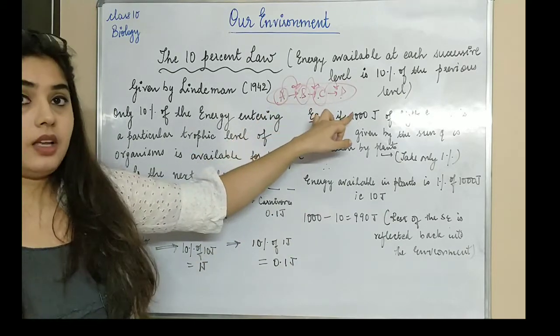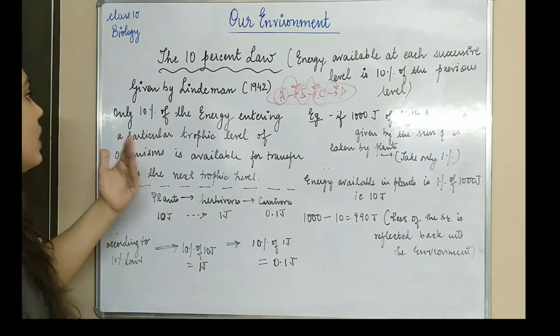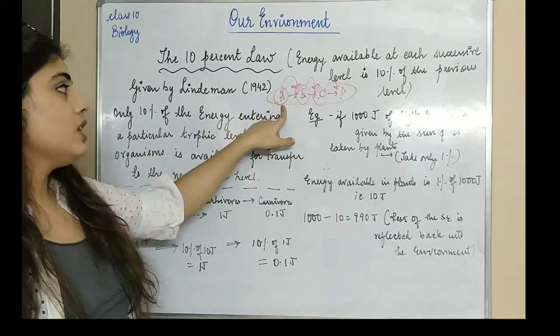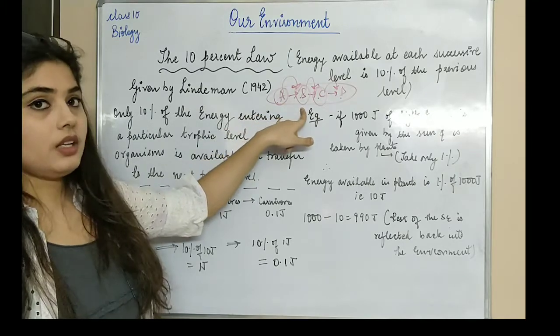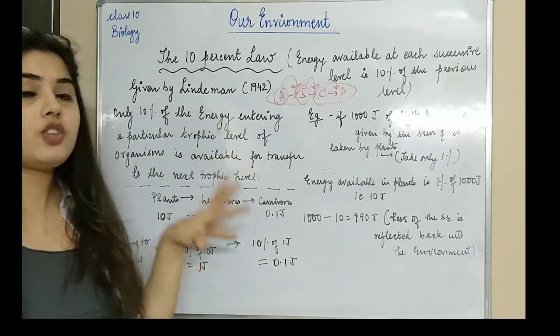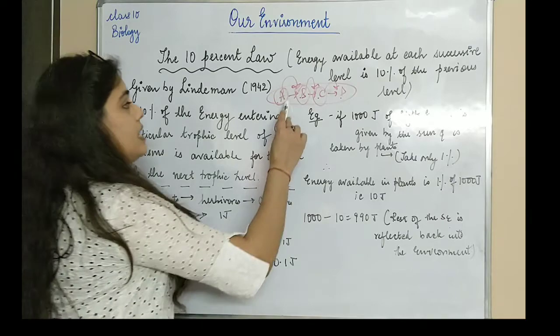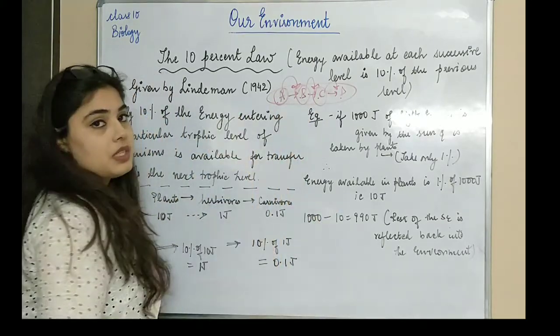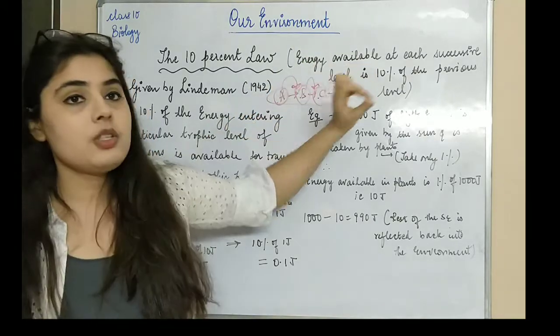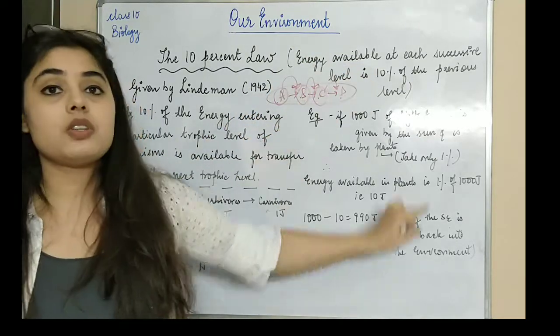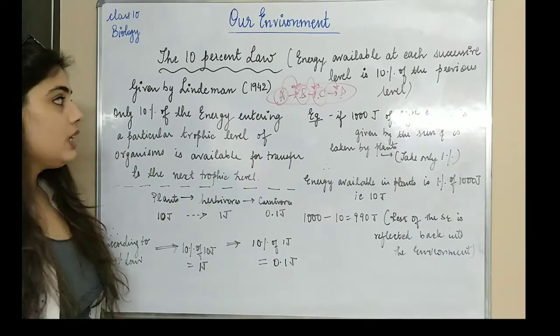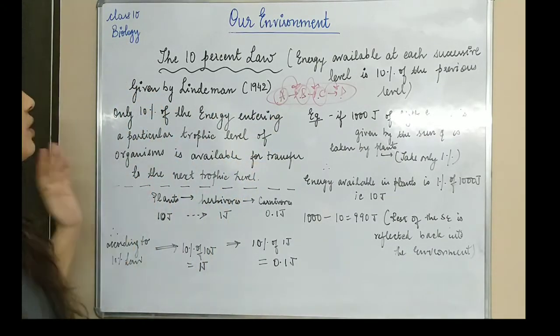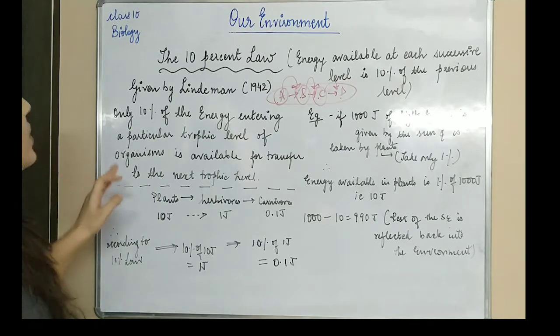So in this A, B, C, D chart, there are four trophic levels. Energy transfer is happening in each trophic level. If energy is going from A to B, then only 10% of A goes to B. If energy goes from B to C, then 10% of B's energy will go to C. Similarly, when C's energy goes to D, only 10% will go. This is how energy transfer happens in A, B, C, D.